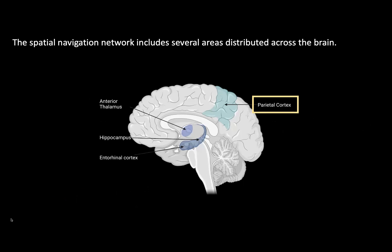The human brain is able to create a memory of our self-movement and speed across time in order to help us understand where we are in space. The vestibular system, located in our inner ear, senses our speed or movement in space and sends that information into a distributed spatial navigational network. This distributed network includes several brain regions, such as the anterior thalamus, hippocampus, entorhinal cortex, and the parietal cortex.